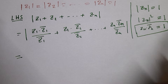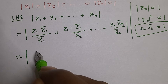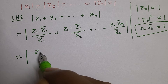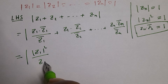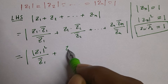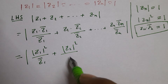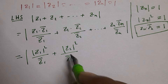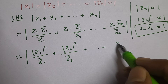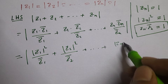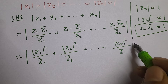So |zₙ|² / z̄ₙ gives us mod z₁² / z₁̄, mod z₂² / z₂̄, and mod zₙ² / z̄ₙ.